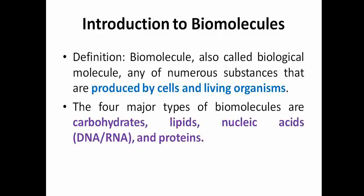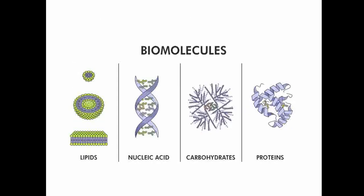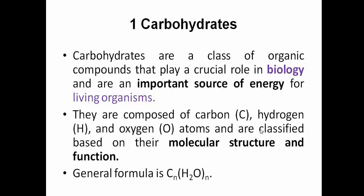There are four major types of biomolecules: carbohydrates, lipids, nucleic acids, and proteins. Lipids have particular layered structures — we call them lipid bilayers, with hydrophobic and hydrophilic parts. Nucleic acids include DNA, which is double-stranded, and RNA, which is single-stranded. Carbohydrates contain carbon, hydrogen, and oxygen, and proteins are chains of amino acids.